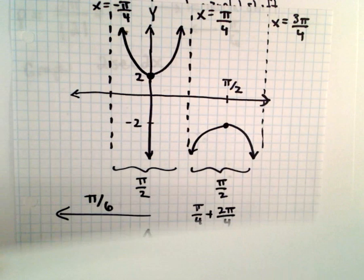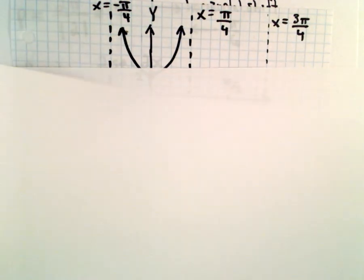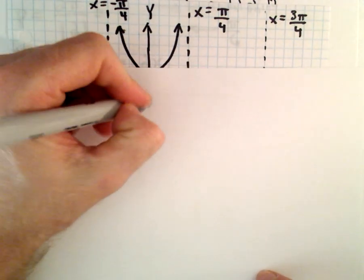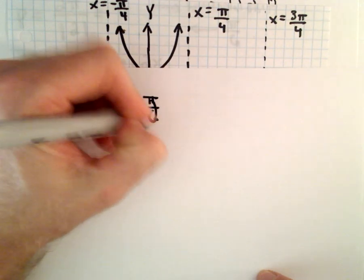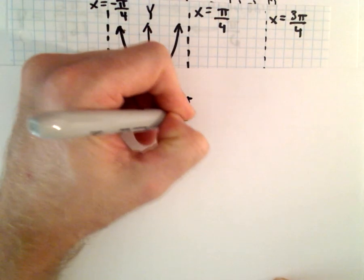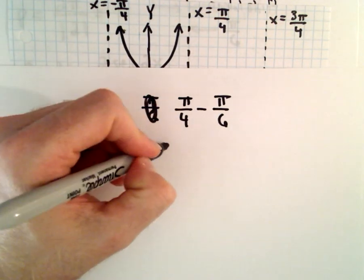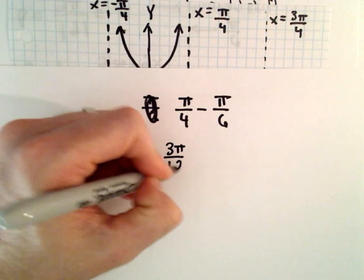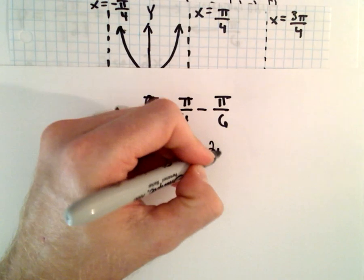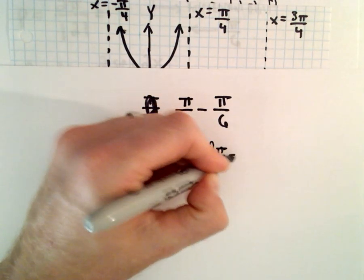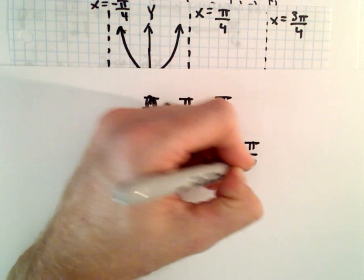So, originally you had x equals pi over 4 as one of the asymptotes. So, if we take pi over 4 and subtract away pi over 6, that'll give us 3 pi over 12 minus 2 pi over 12, and that'll leave us with pi over 12.